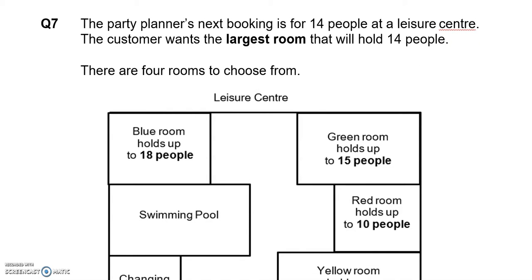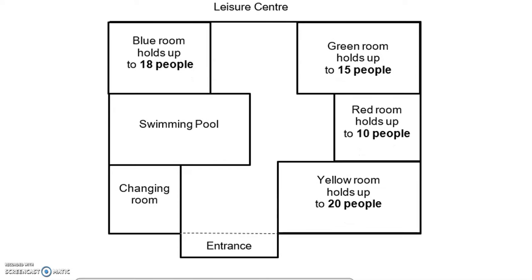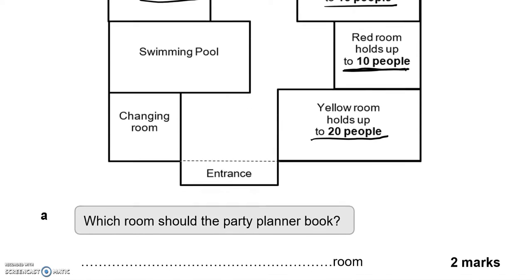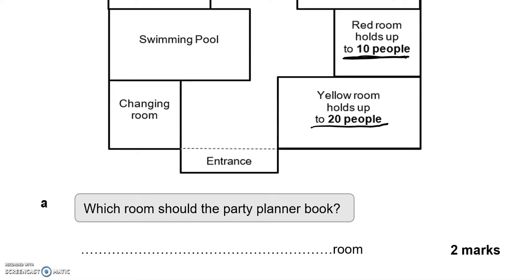The party planner's next booking is for 14 people at a leisure centre. The customer wants the largest room that will hold 14 people. The blue room holds up to 18, the green room holds up to 15, the red room holds up to 10 — not enough — and the yellow room holds up to 20 people, which is the largest room and holds 14 and more. The party planner should book the yellow room.